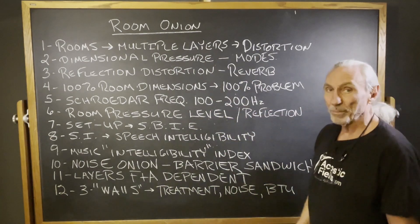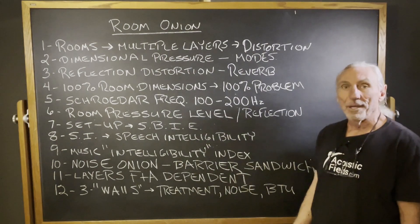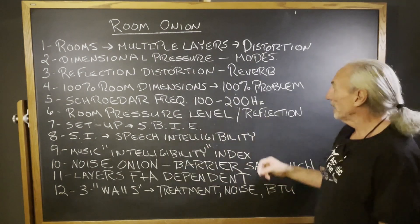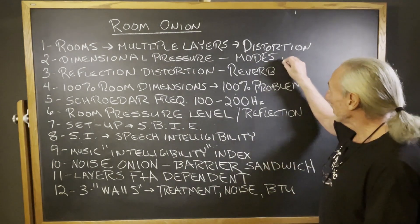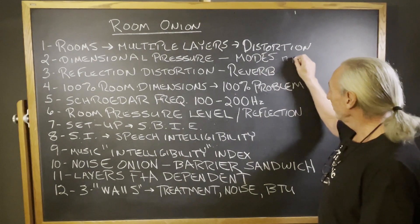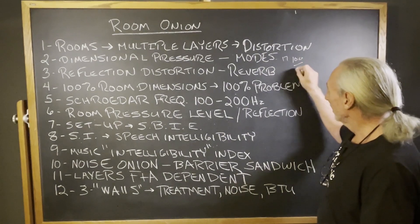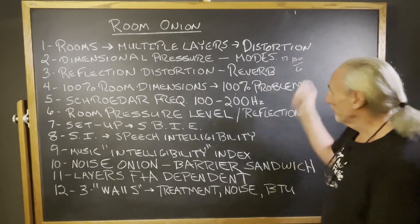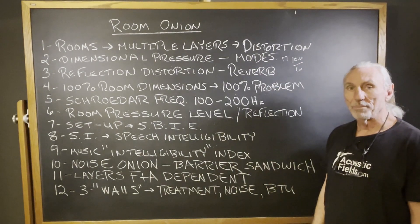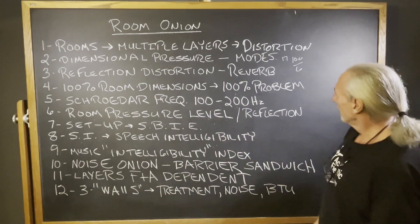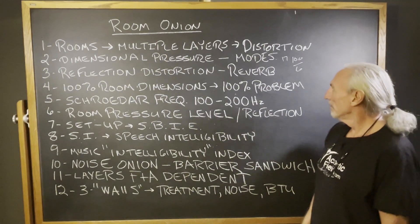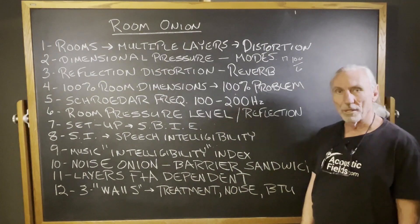Reflection, distortion, reverberation. Every surface in our room contributes about 17%. You take 600 divided by six surfaces, you're going to get about 17%.